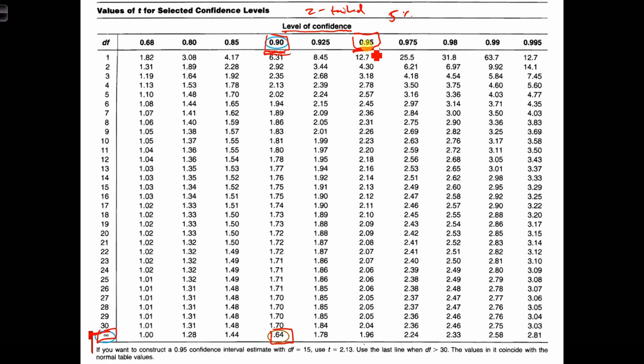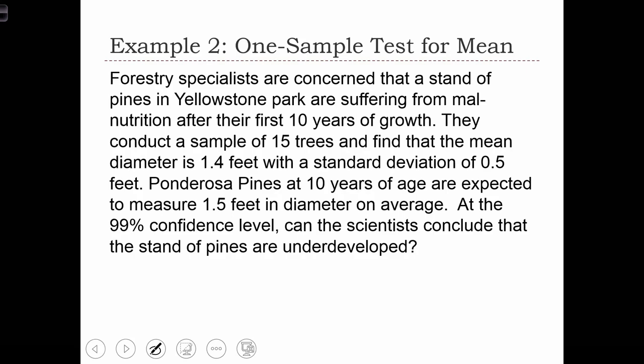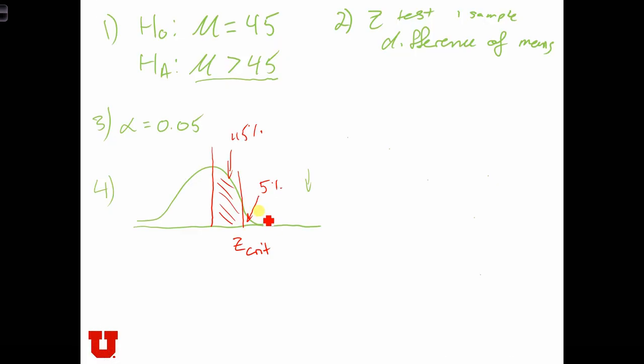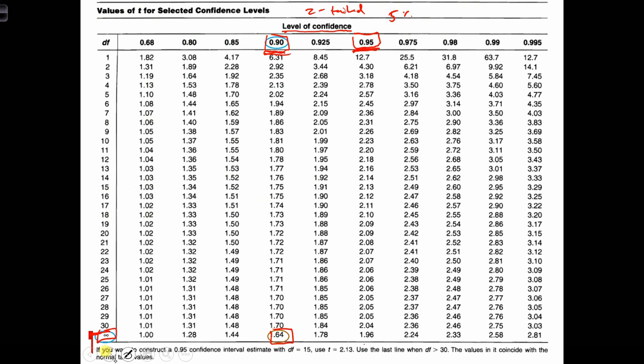If we use the 95%, that would be a test that put 2.5% in each tail. That would be a test with a critical value, say, over here, with that being equal to 2.5%. So here's our Zcrit. We just found out that the Zcrit is 1.64.